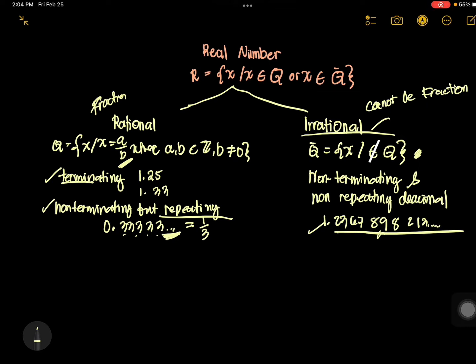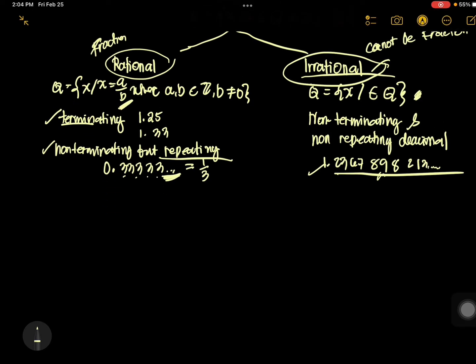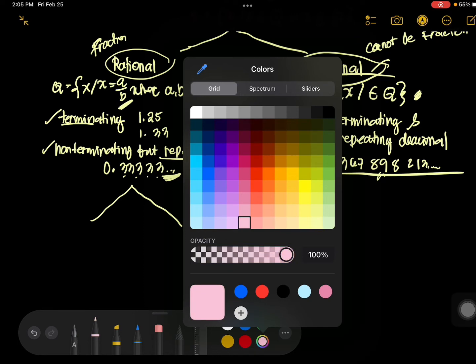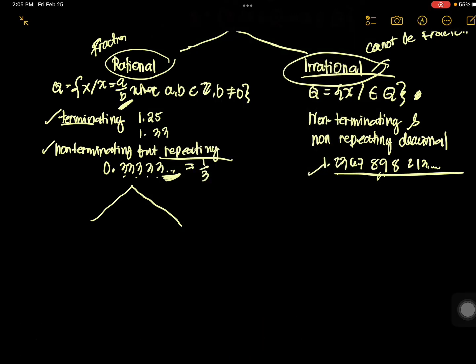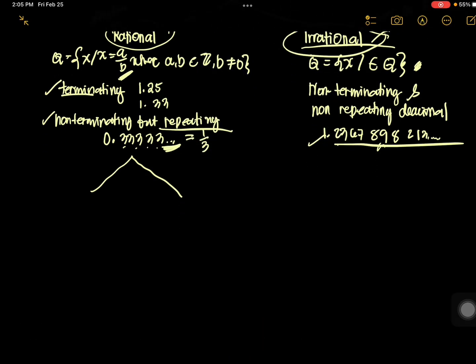Did you get the idea — the difference between rational and irrational? Now, rational numbers are subdivided into 2. The answer is: we have integers and non-integers.